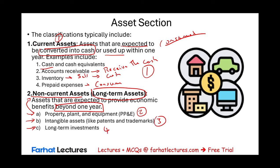Under non-current assets, we have a subsection called property, plant and equipment; one subsection called intangible assets; and one called long-term investments. So we have current assets and non-current assets, with non-current assets having those three subsections.